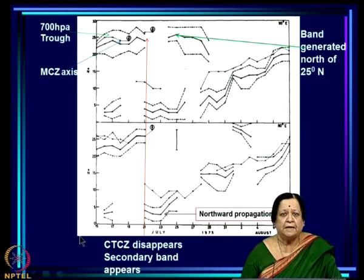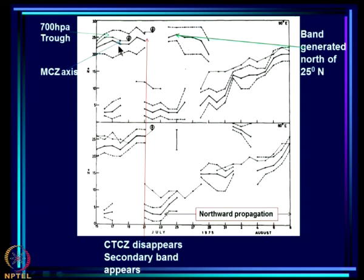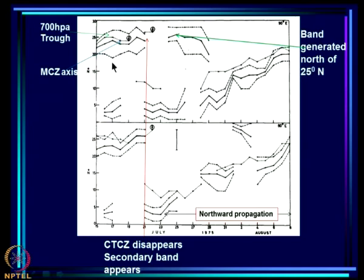What you see here is the daily variation of the MCZ axis shown as a solid line, along with the southern and northern limits of the MCZ, and in addition the 700 mb trough axis — the axis of the large-scale non-orographic rainfall. This comes from weather charts and satellite imagery, both shown here. When there is no maximum cloud zone in the image, you get a gap over that latitudinal belt.